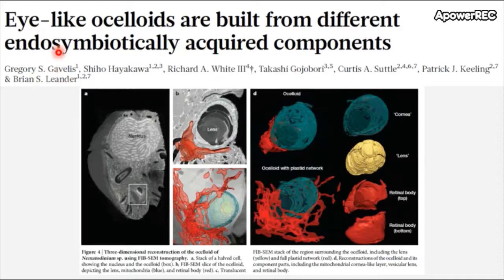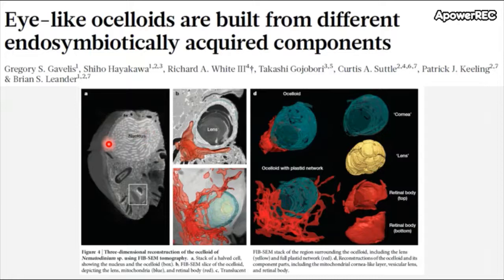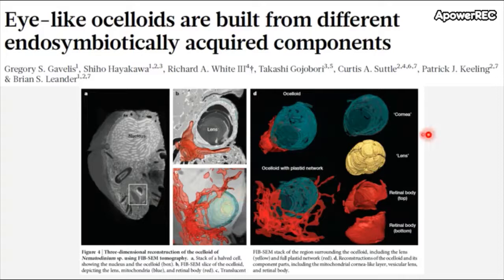Greg is probably most well-known for his publication in Nature titled 'Oceloids are built from different endosymbiotically acquired components.' In this image you have a single cell — not an eye, even though it has an eye-like apparatus it uses to detect light. This apparatus is composed of a variety of different plastids and pigments that it gets from either consuming cyanobacteria and algae, or degrading their components and using their individual pigments. From this, it has something that is a type of cornea, can form a type of lens, a retinal body — a very complex structure built through endosymbiosis.